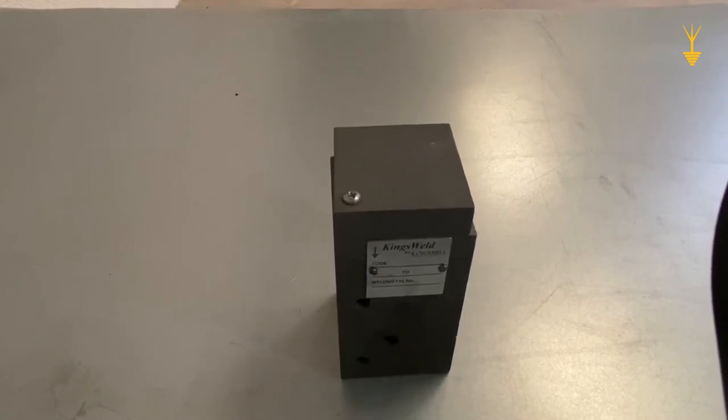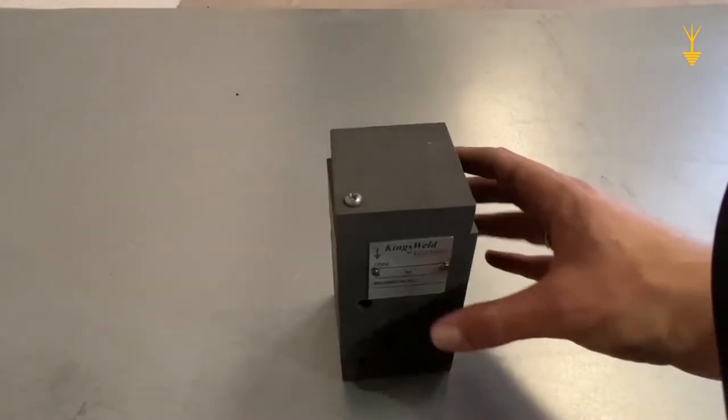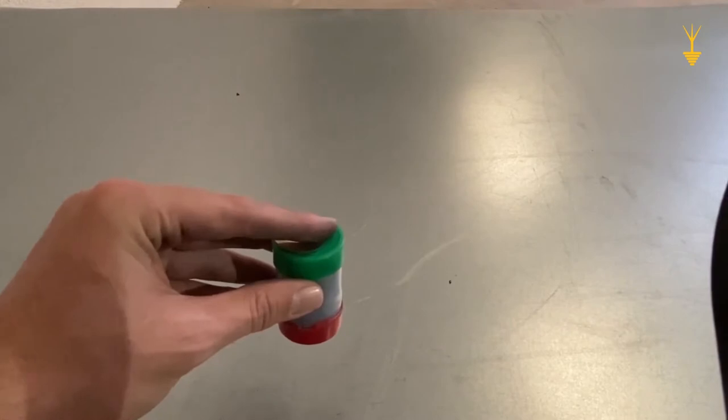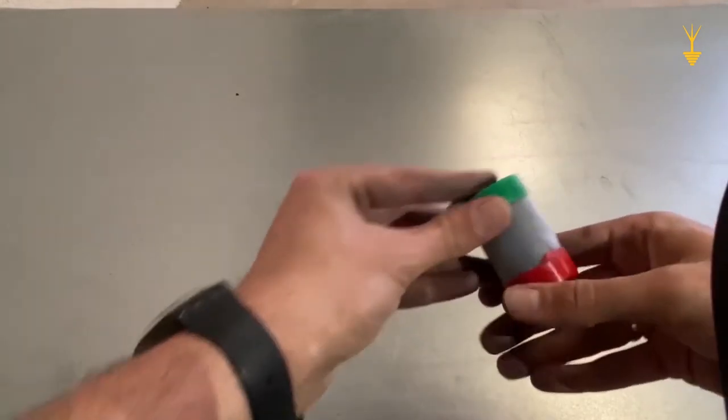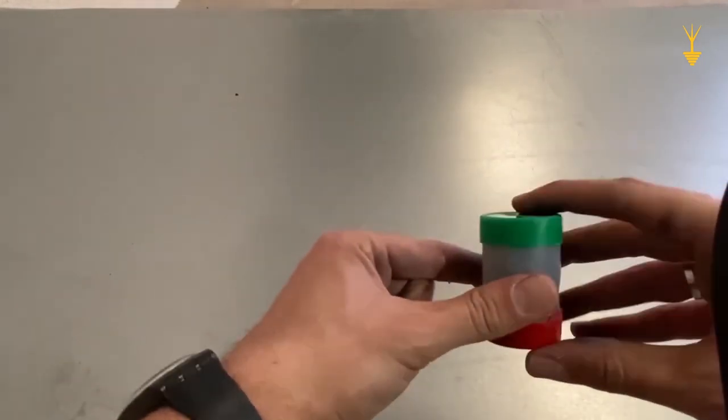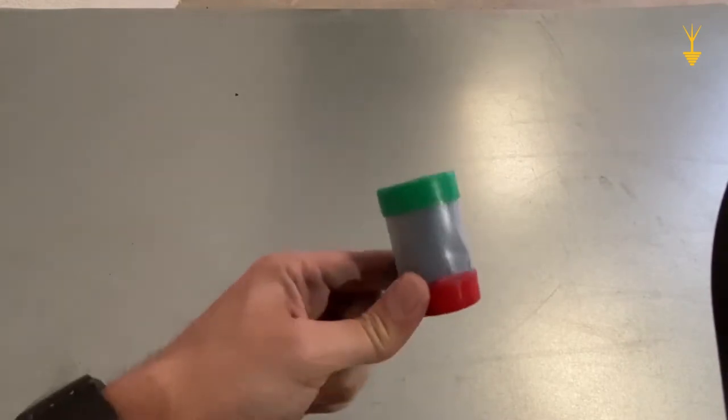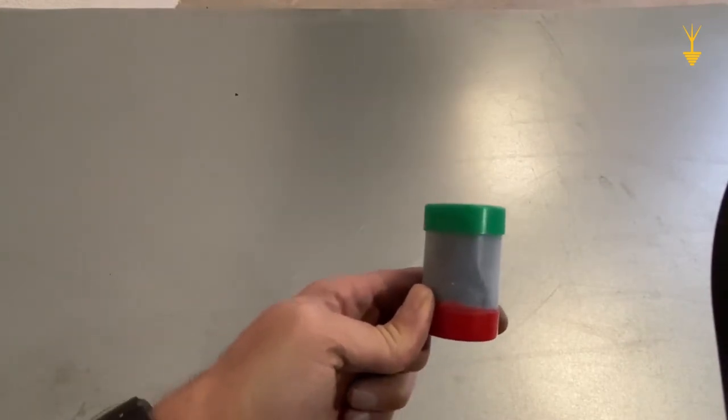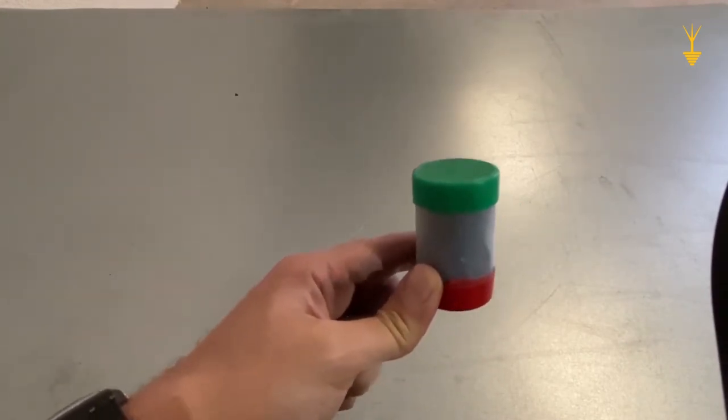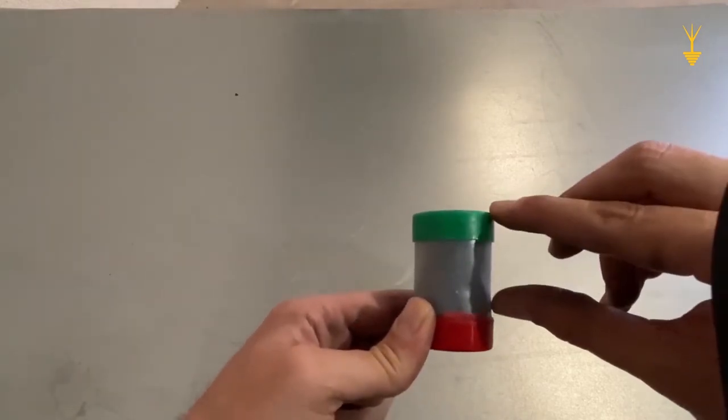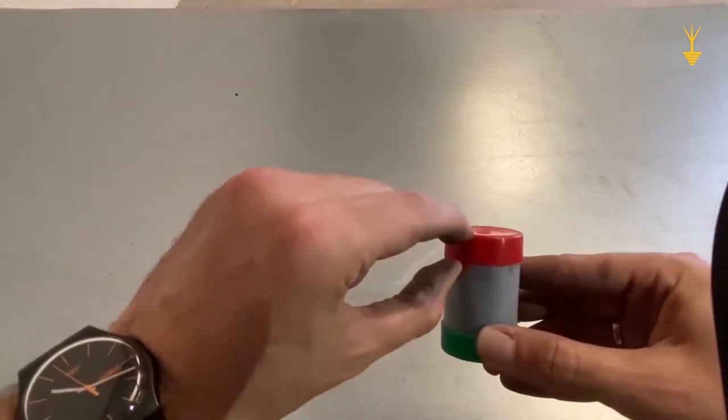Next, let's take a look at the weld metal cartridge. At Kingsville, we supply our exothermic weld metals in pre-measured doses that are ready for use in your construction. They are packed in plastic cartridges that each have two compartments, a larger one at the top, and a smaller one at the bottom.